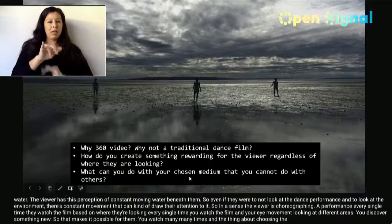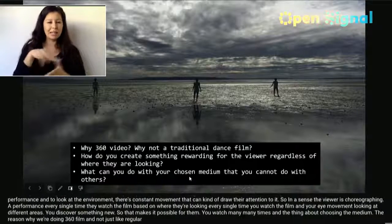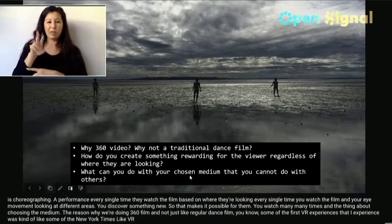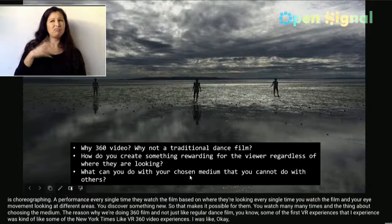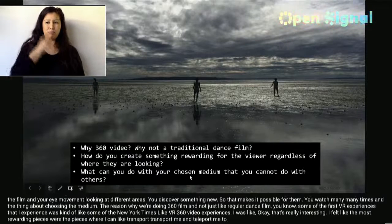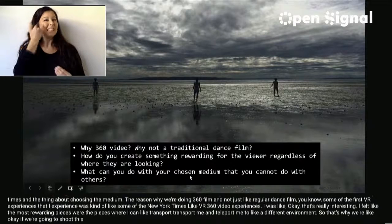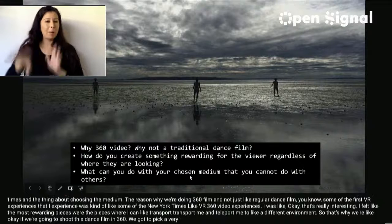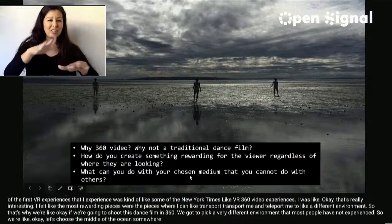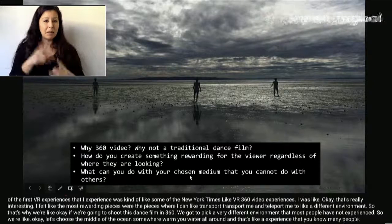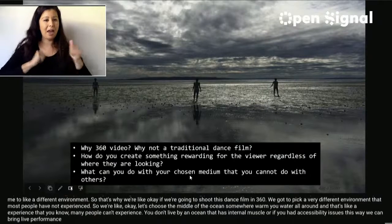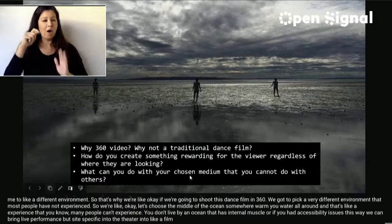The reason we chose 360 film over regular dance film is that some of the first VR experiences I had — like the New York Times 360 video pieces — felt most rewarding when they transported me to a different environment. So we picked a very different environment most people haven't experienced: the middle of the ocean where you can see water all around. Many people can't experience intertidal mudflats if they don't live near the ocean or have accessibility issues. This way, we can bring site-specific live performance into theaters, film festivals, or someone's home on their own devices.